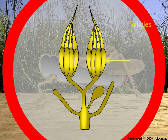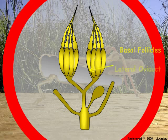Mature oocytes are present in the basal follicle. Mature oocytes are coronated in the follicle, then passed into the lateral oviducts and to the common oviduct.